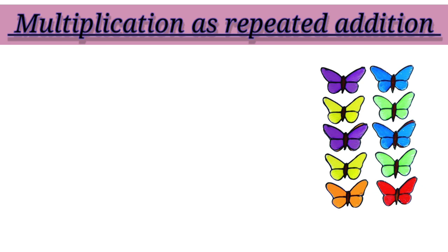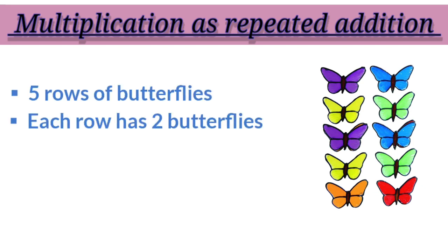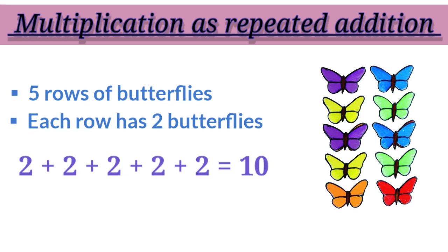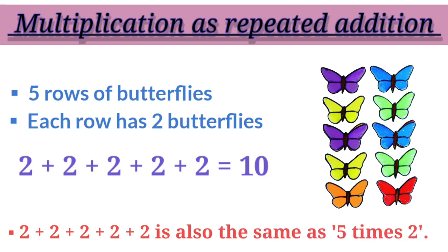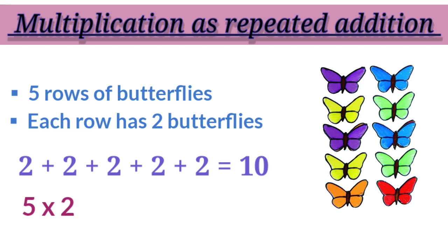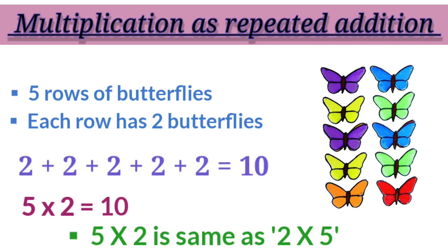Next example, we have five rows of butterflies. Each row has two butterflies, which means we have to add two how many times? Yes, we have to add two five times. That means two plus two plus two plus two plus two equals to ten. Two plus two plus two plus two plus two is also the same as five times two. Hence, two plus two plus two plus two plus two equals to ten, or five multiplied by two equals to ten. Children, five multiplied by two is same as two multiplied by five. Even if we switch the place, the answer will remain same.